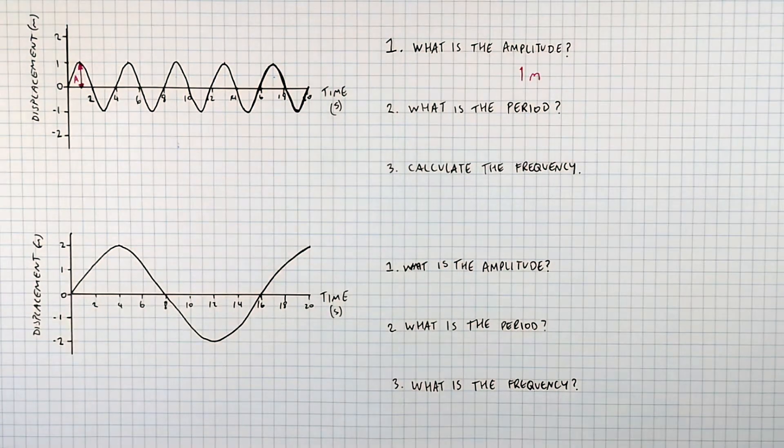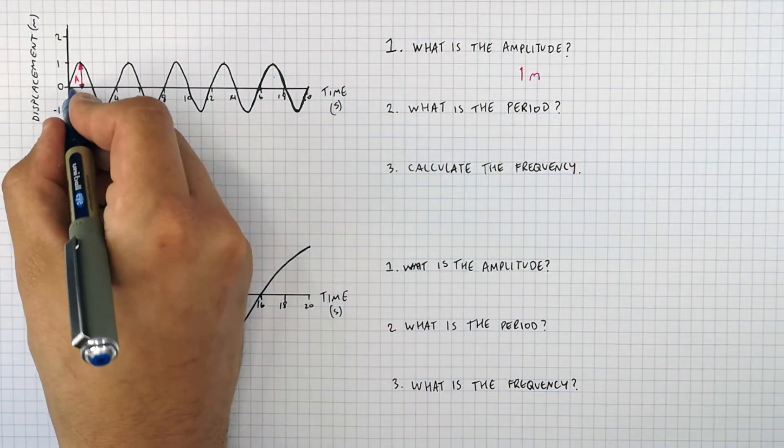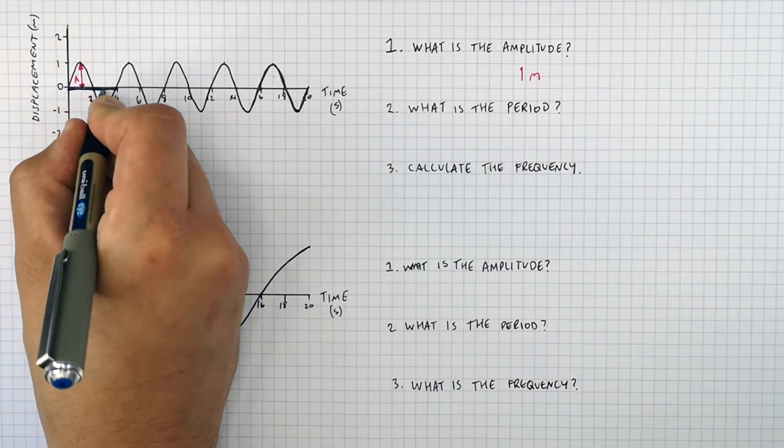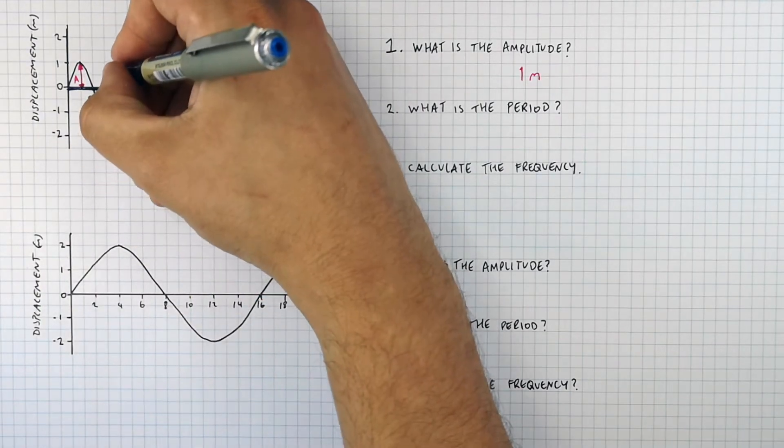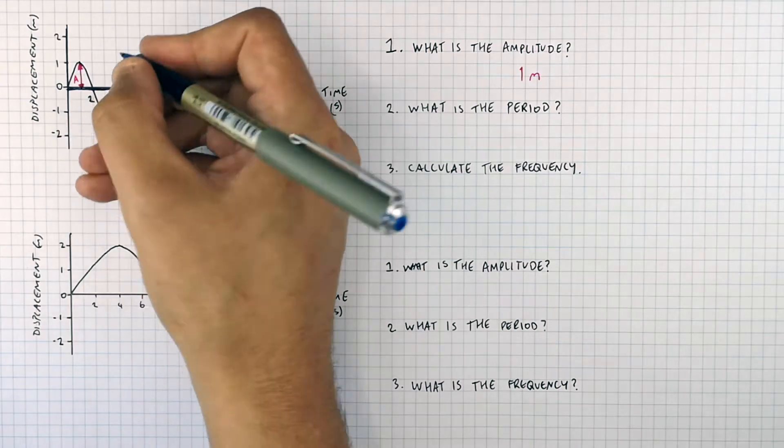Period of a wave is the time it takes for one complete cycle of a wavelength to be completed. So if we start at zero seconds, we go from the undisturbed position of the first wave to the next equivalent point, which is the undisturbed position of the next wave, that means the period of this wave is going to be four seconds.